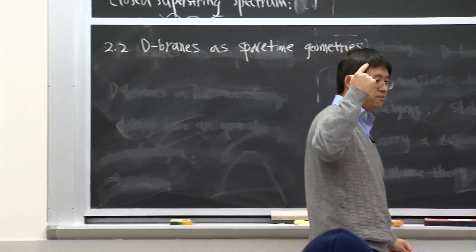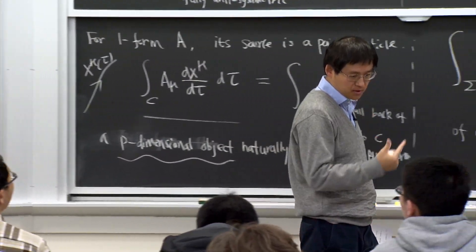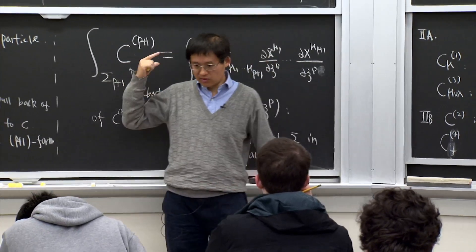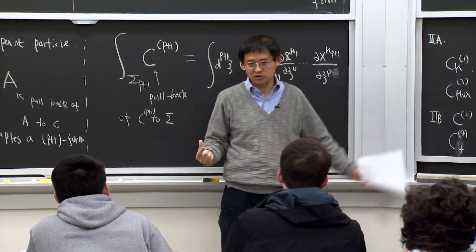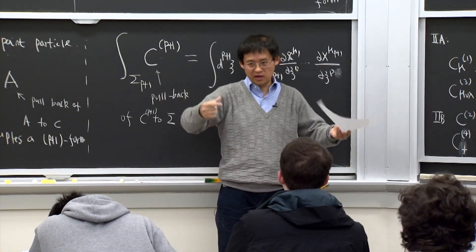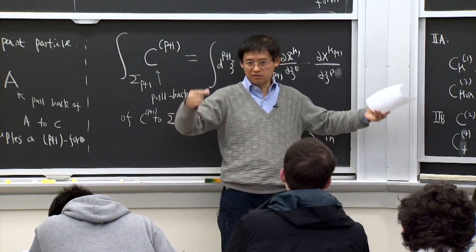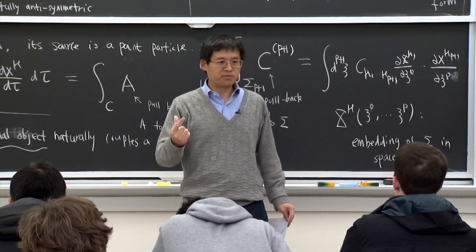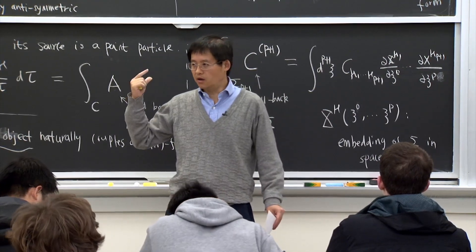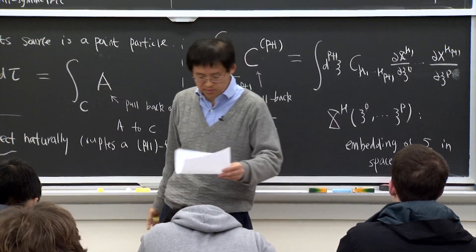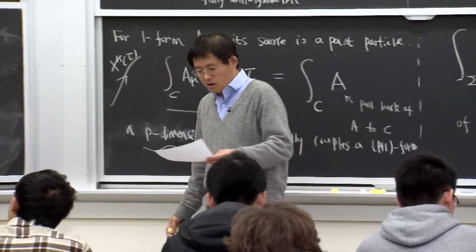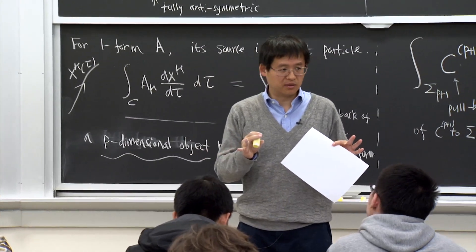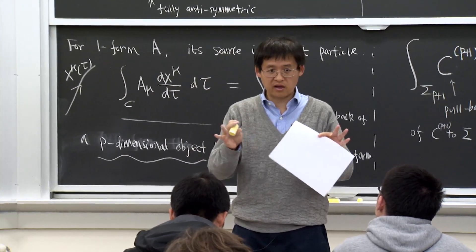The D-brane has a mass — a tension — and carries a conserved charge. That means there will be electric or magnetic flux coming out of the brane. The mass will deform the spacetime through gravity. We would like to find out what the spacetime around those D-branes looks like.